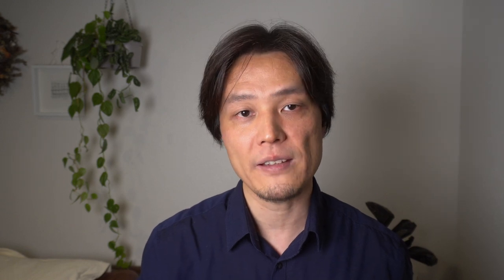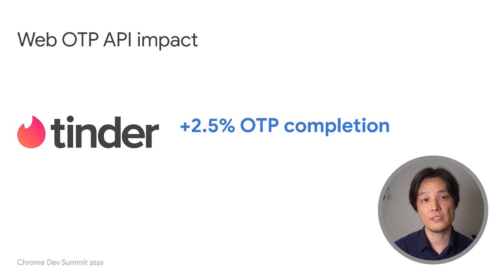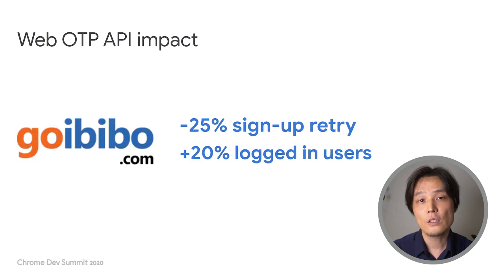There are a few partners seeing amazing results by adopting the WebOTP API. Tinder, a matching app, improved OTP completion rate by 2.5%. Oyo, a hotel booking service, reduced time to login by 37%. Goibibo, a travel booking service, reduced sign-up retry by 25%. Other players like ShopPay from Shopify, Twitter, and Facebook are preparing to bring this feature as well.